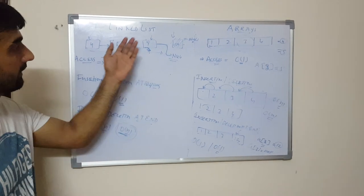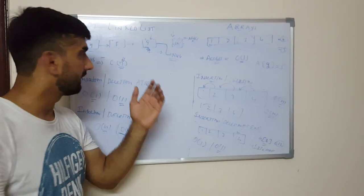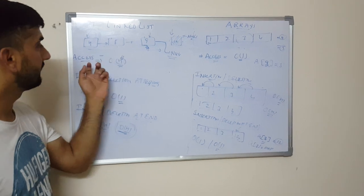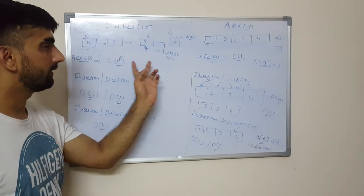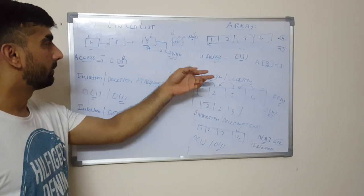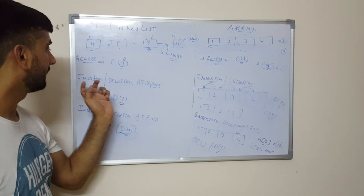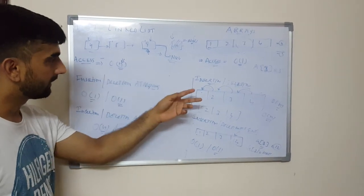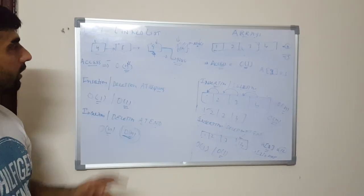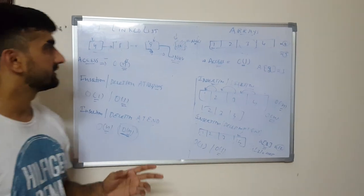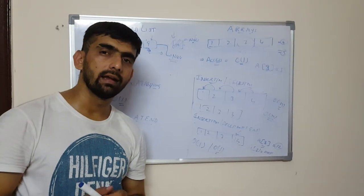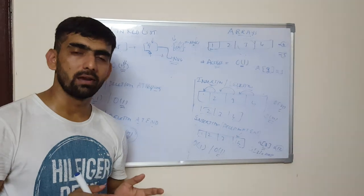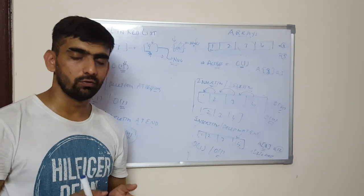That's all about linked list versus arrays - how time complexity behaves when we do different operations: accessing a particular element, insertion or deletion at the end or at the beginning. This is all about today's session. I hope you like it. Please do like, comment, and subscribe to my channel. Thanks for watching.